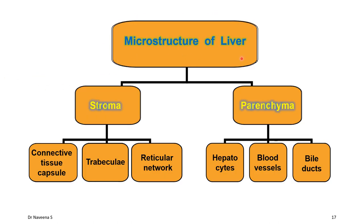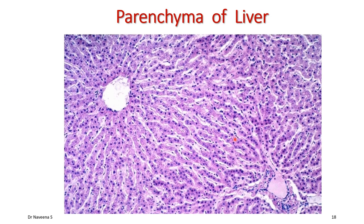In summary, the microstructure of liver is composed of stroma and parenchyma. Stroma is connective tissue forming the capsule and trabeculae that divide parenchyma into lobules. Parenchyma is composed of hepatocytes, blood vessels, and bile ducts. In H&E stained liver tissue, hepatocytes are arranged in single cellular layers that anastomose with each other, separated by sinusoids which open into the central vein. Hepatocytes form 70% of parenchyma, alongside blood vessels and bile ducts.